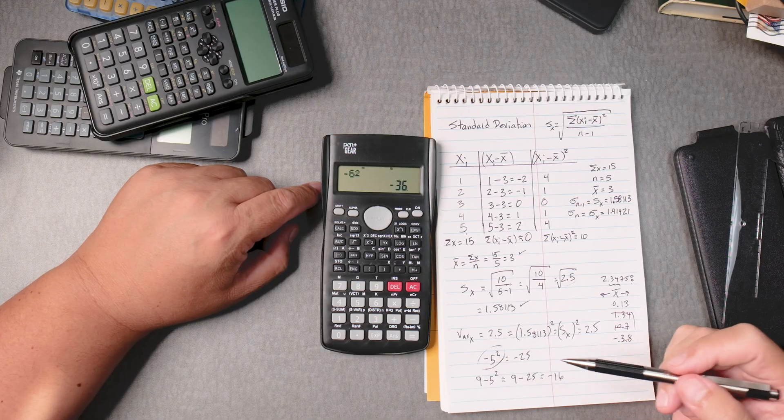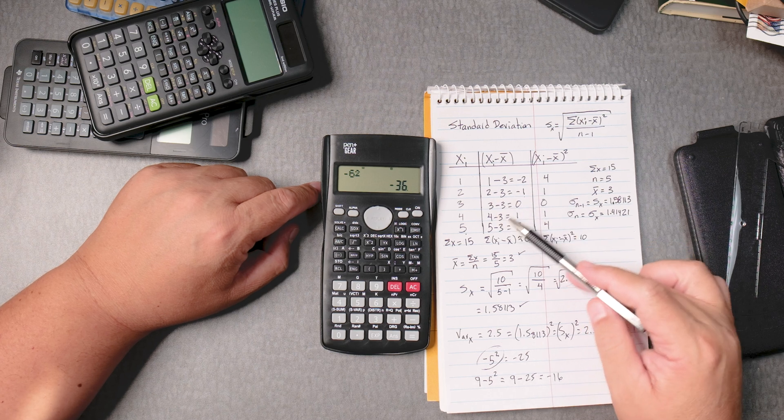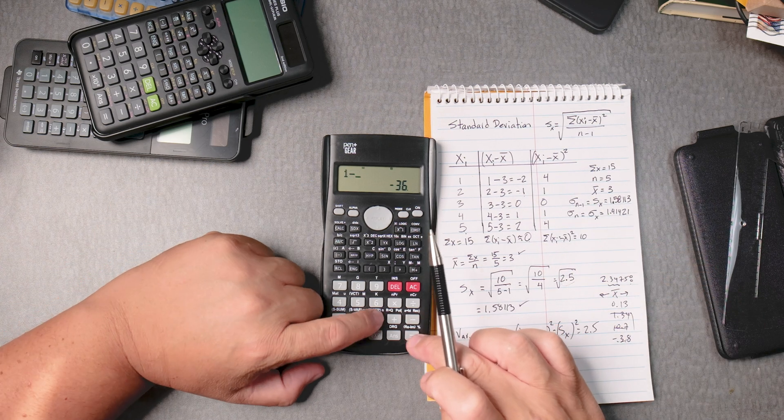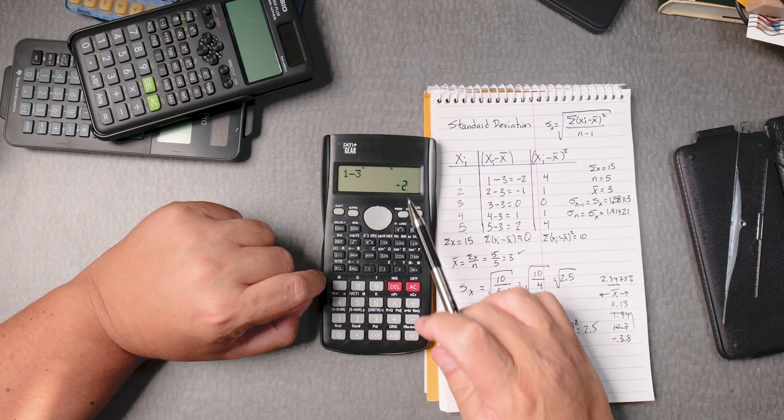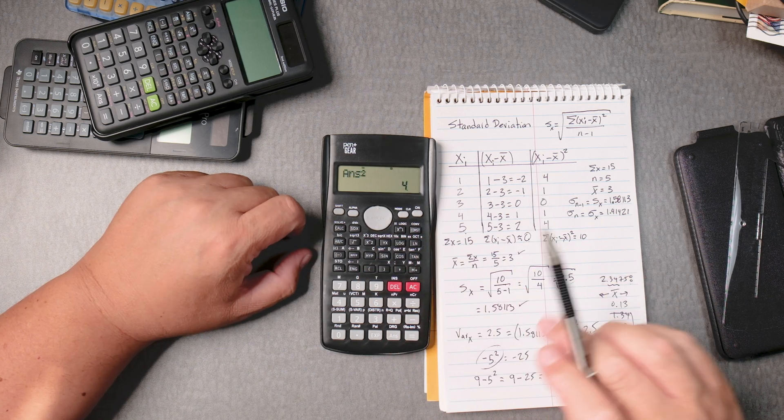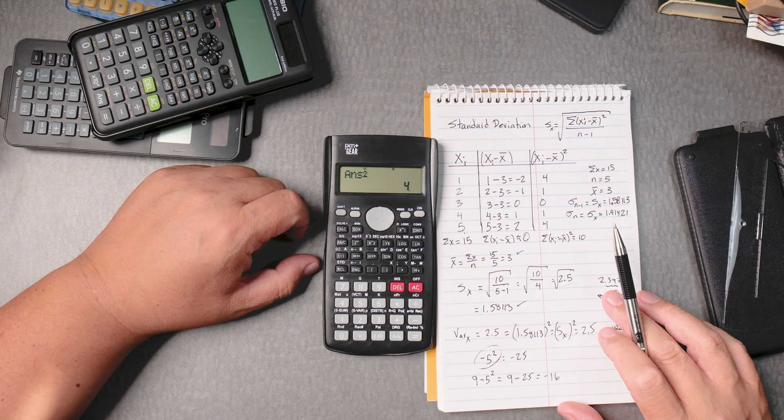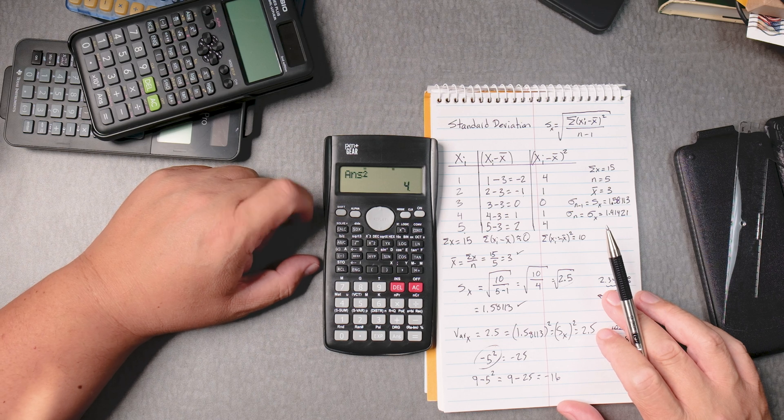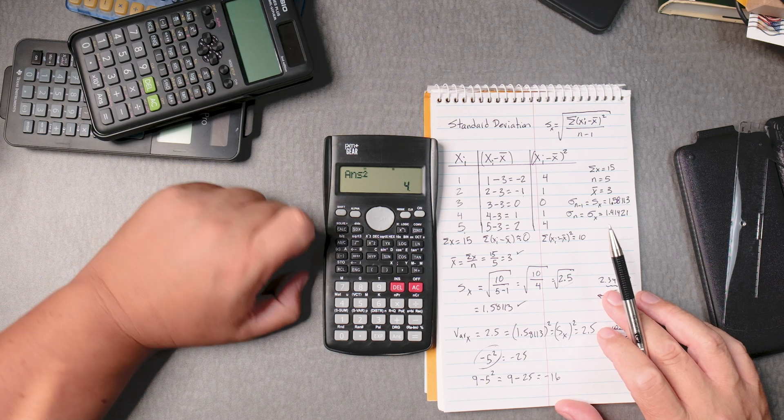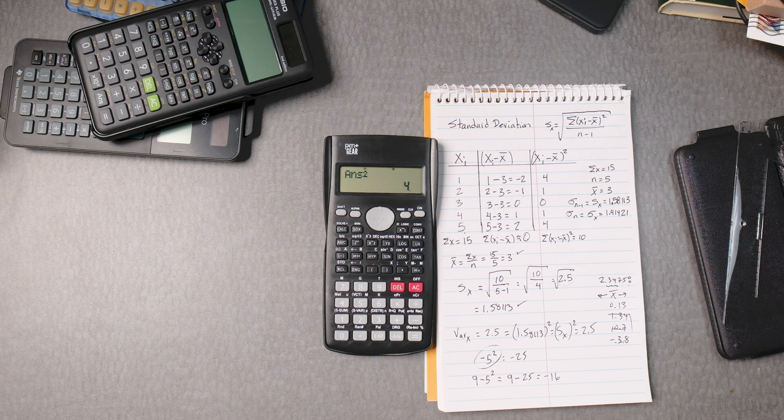So be just aware that here, when we did this, 1 take away 3 equals negative 2 and then we squared it. It gives you 4. We didn't have an issue there. Which is kind of weird. But that's how these algebraic calculators work.